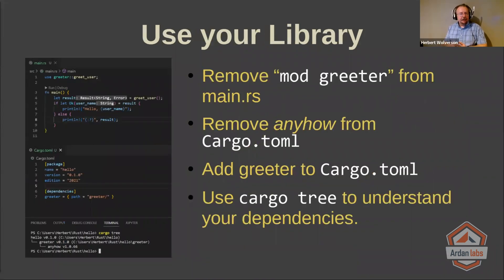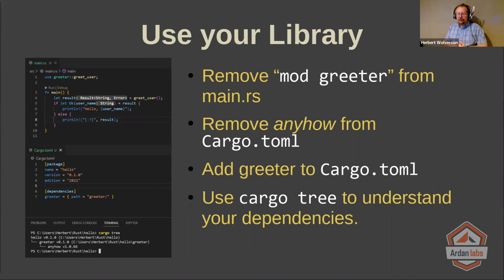Actually using it requires that we open up the cargo.toml file in the original, and in our dependencies we can put greeter equals and then in curly brackets path and where you put the library. This is extremely flexible — you can use git equals and a path to a git repository, or path equals a path to wherever it is on your file system, which can be relative or absolute. There are a whole lot of other options, including pulling it from other source control, or you can have published it to the world and pull it in the same way you did anyhow.